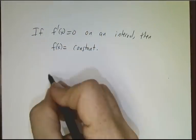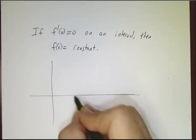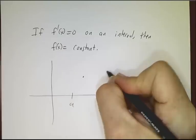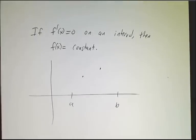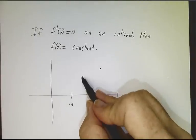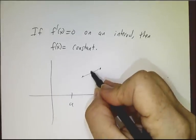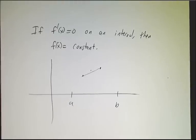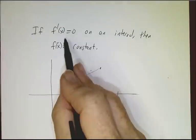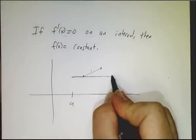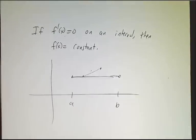How do we know that? Well, suppose it wasn't constant. Suppose you had a point here and a point here with different values. Well, then in between those two points, you would have a non-zero average rate of change. And the mean value theorem says that somewhere in between, you would have to have a non-zero derivative. That contradicts the fact that you have a zero derivative. So the only way that you can have a zero derivative is if your function is actually constant.